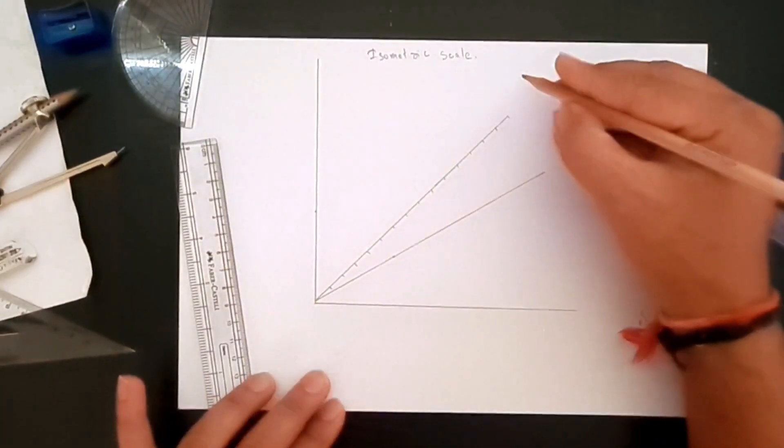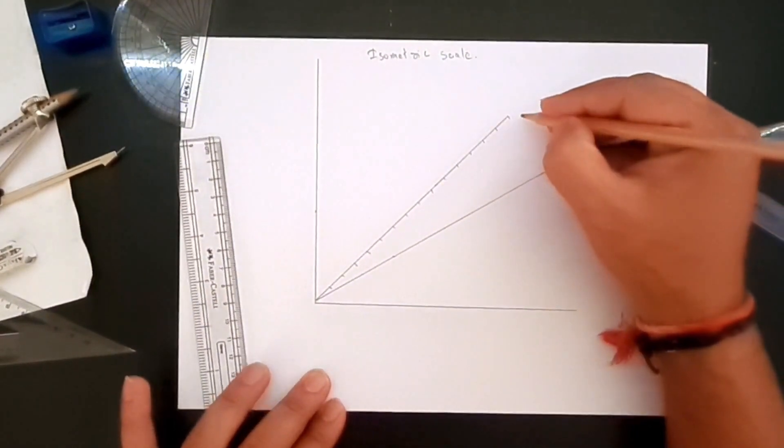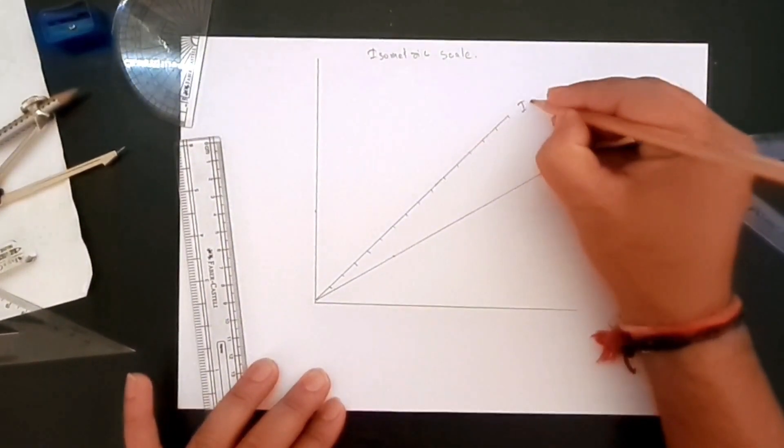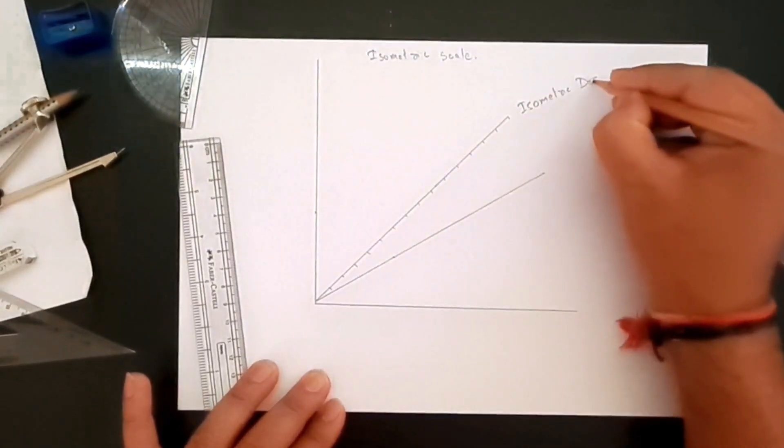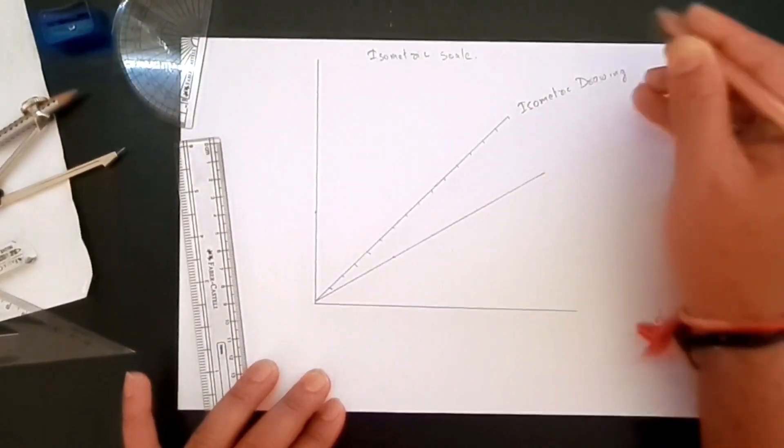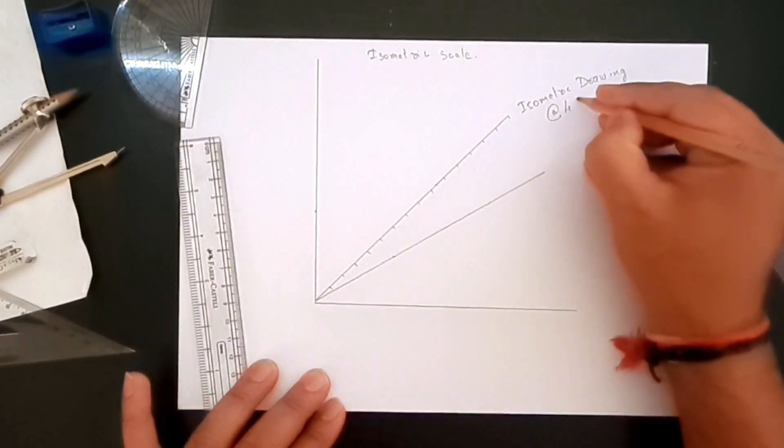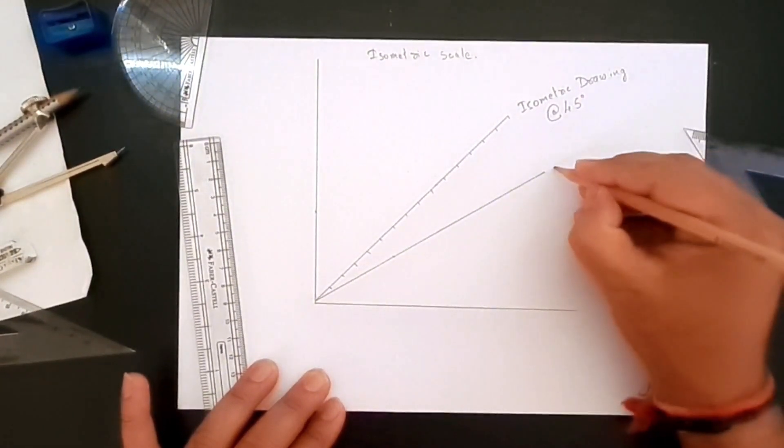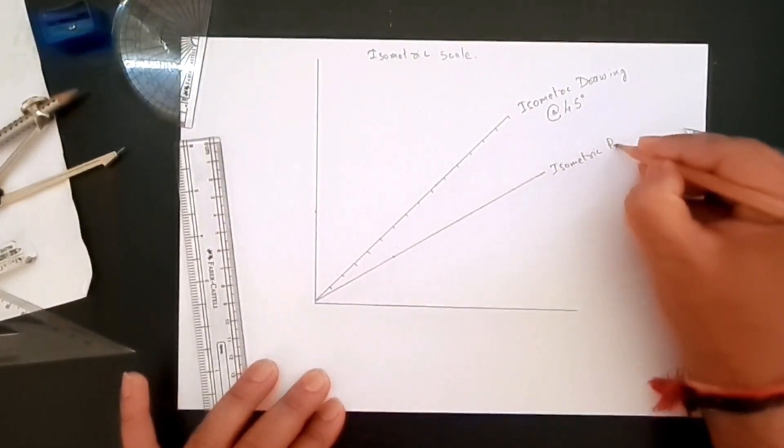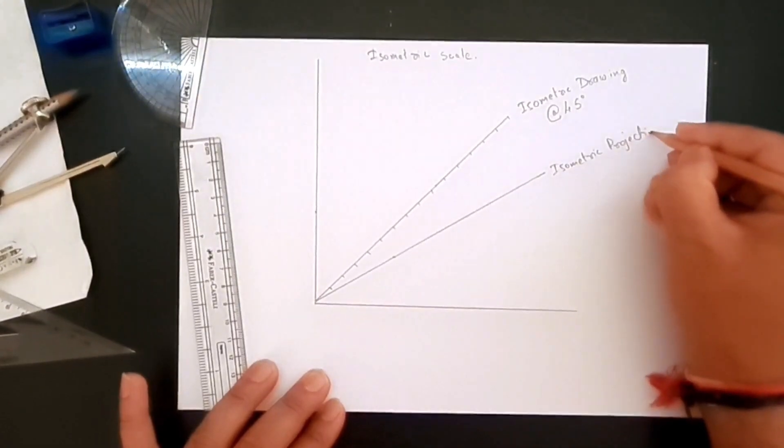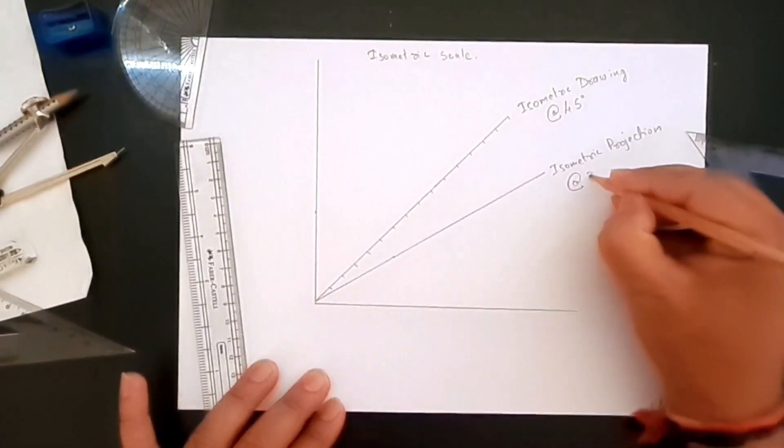So this line is for our normal or isometric drawing at 45 degrees, and this is isometric projection at 30 degrees.